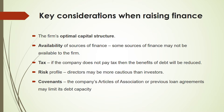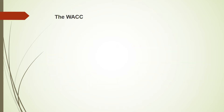The fifth consideration is the covenant: the company's articles of association may limit the debt capacity — beyond a certain level you cannot borrow. It will put restrictions on you if you want to take more debt and are already crossing your debt capacity according to the articles of association. These are the five considerations to look at when raising finance, and you can write these five points in your exam answer.